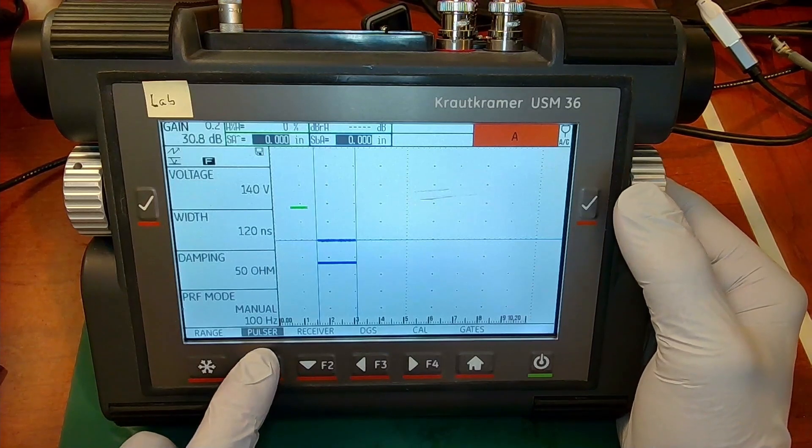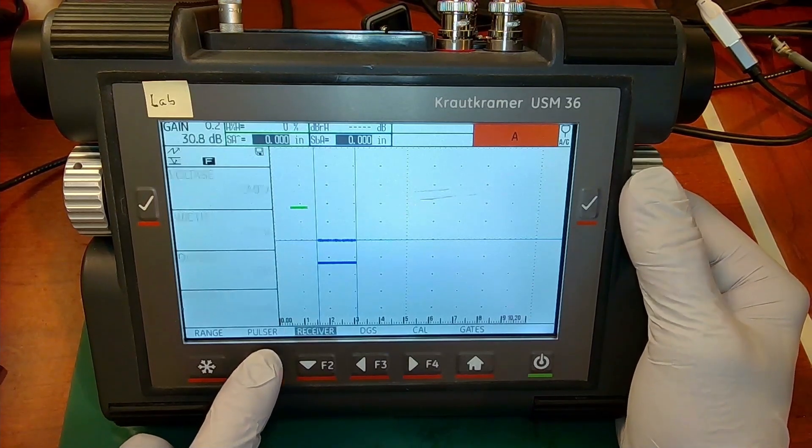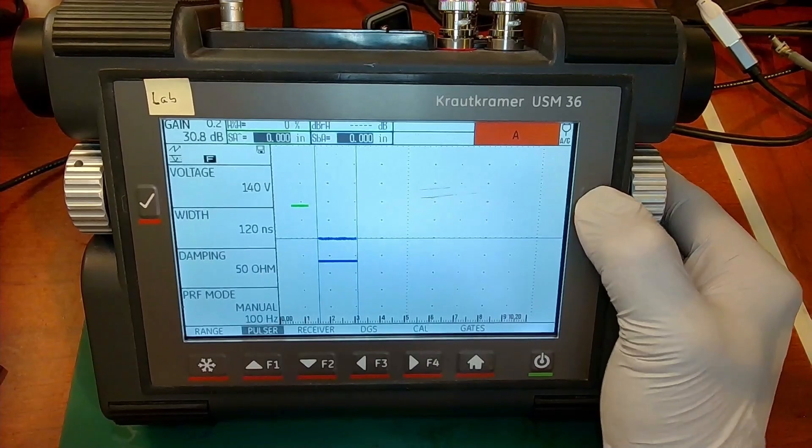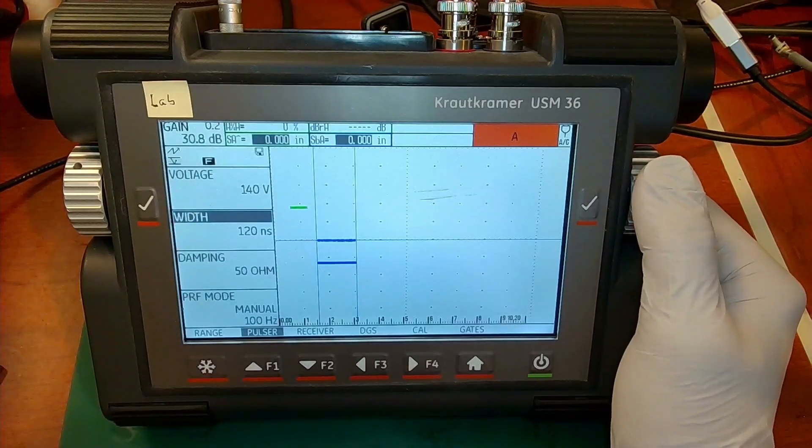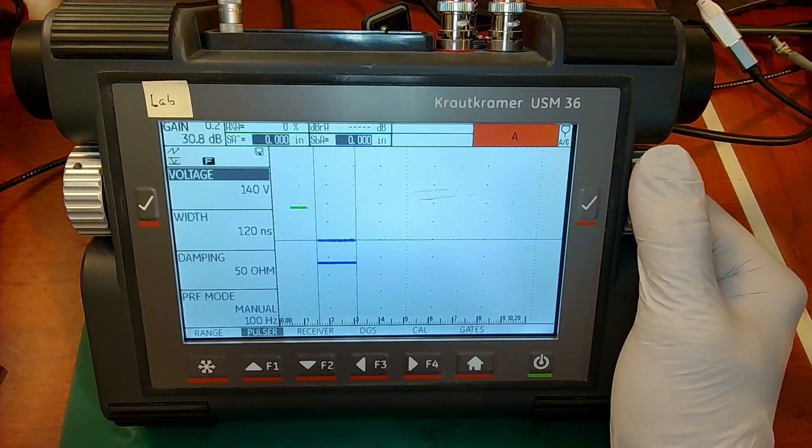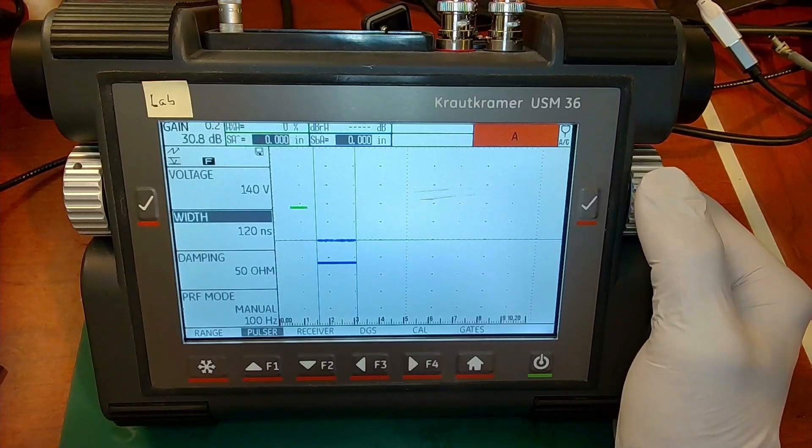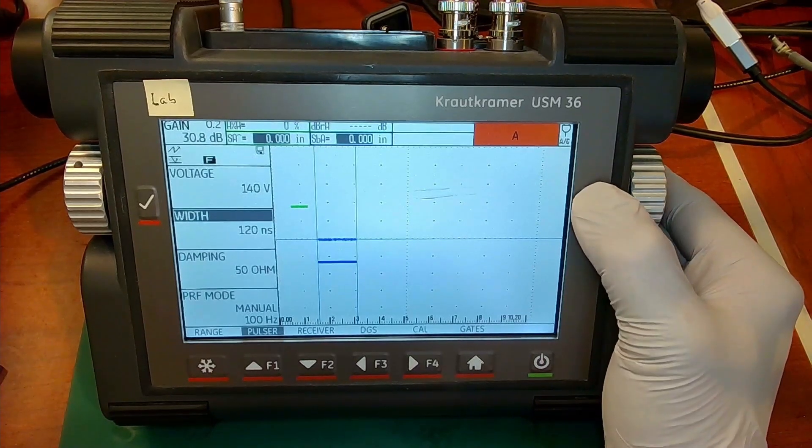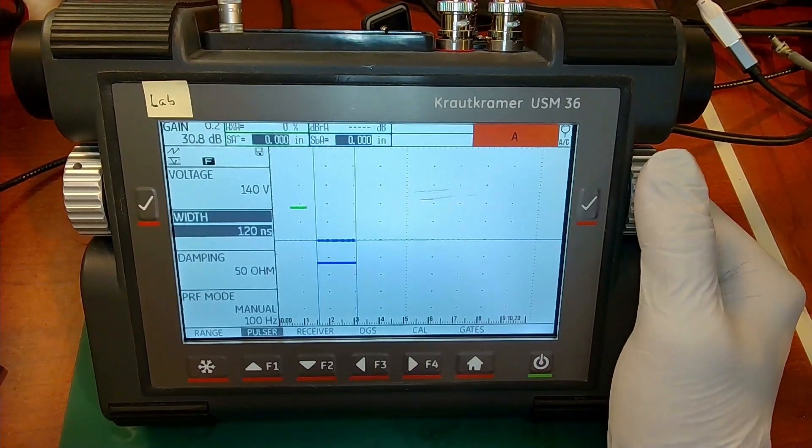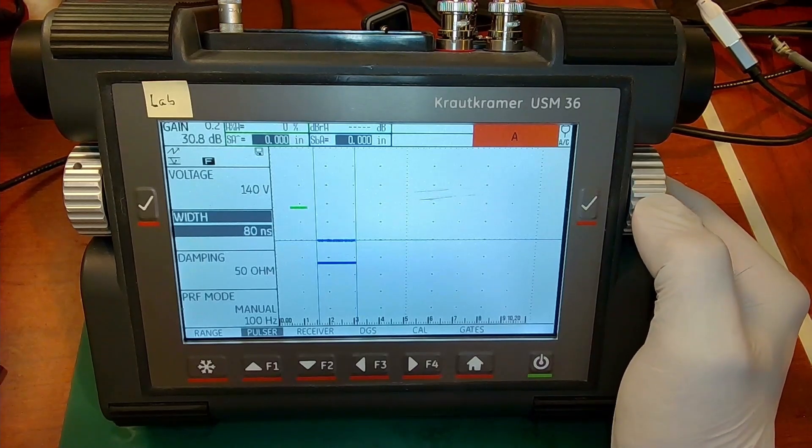But normally you would navigate from menu to menu with the right knob. Let's say we wanted to change the setting on the pulsar menu. We would use the right knob to get to the pulsar menu, hit the check box. That moves the cursor up onto the menu. And now the right knob is selecting a parameter within the menu. Let's say we want to change our pulsar width. And we hit the check mark one more time to activate that control.